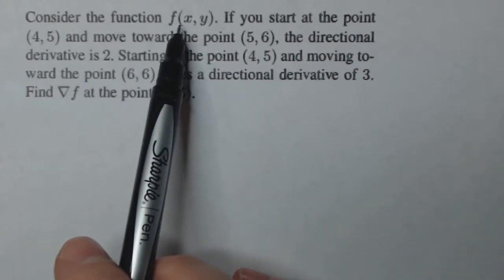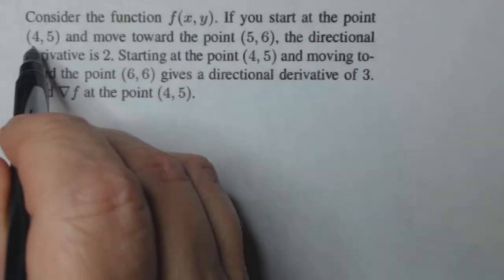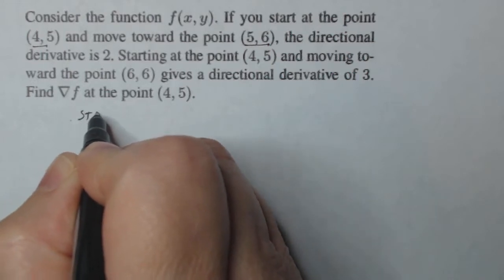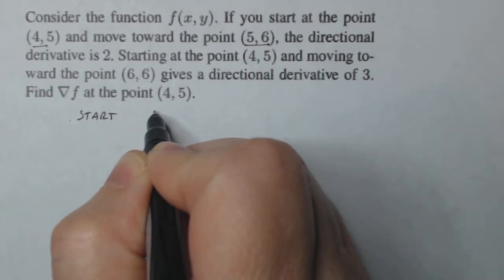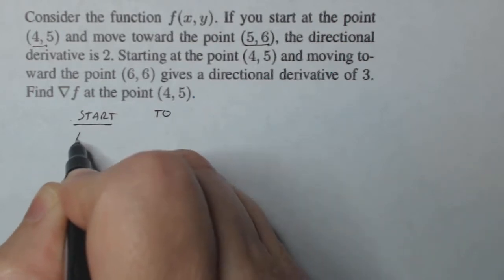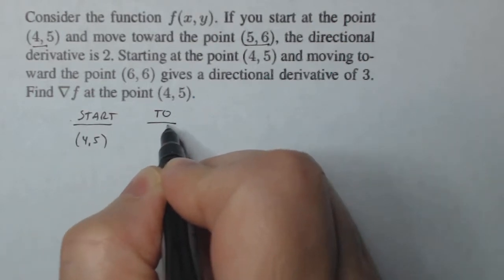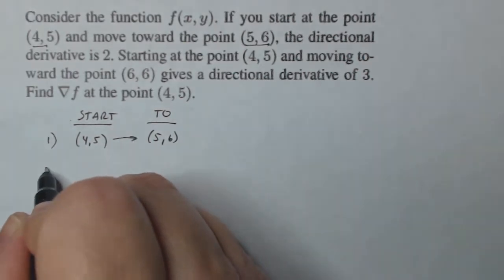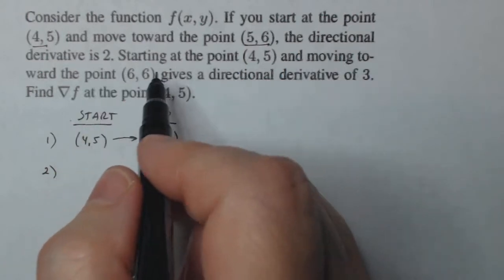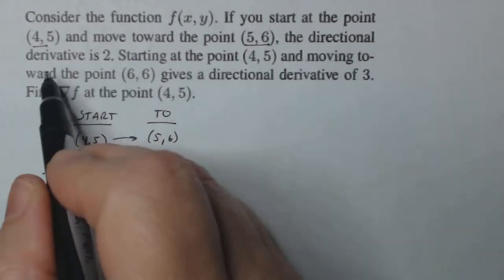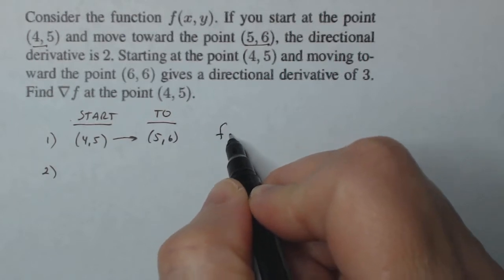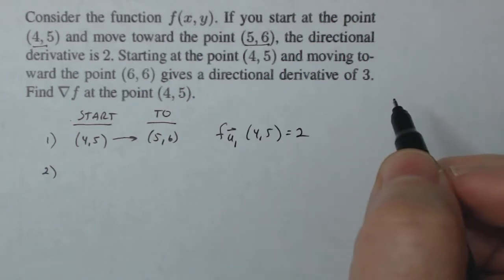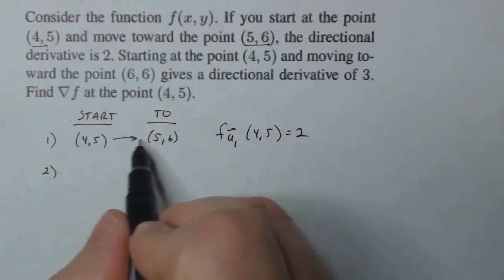So I have a function f(x, y), and I'm starting at the point (4, 5) and moving toward the point (5, 6). The first step is to note where I'm starting and where I go towards. Then it says the directional derivative is two. So my directional derivative of whatever the unit vector is in that direction at (4, 5) is going to be two — this will give me equation one eventually.